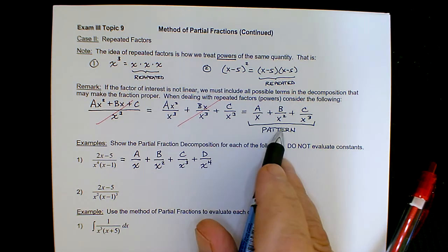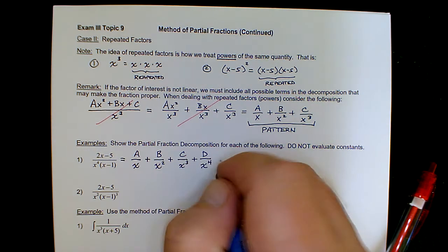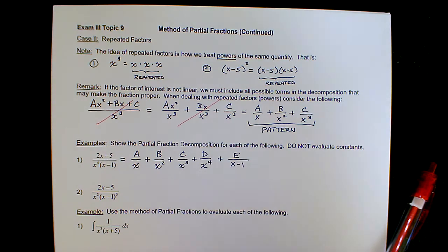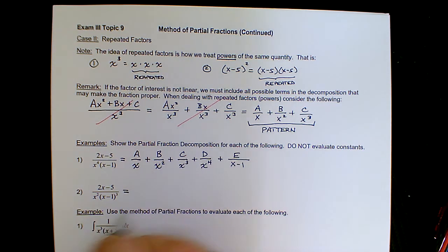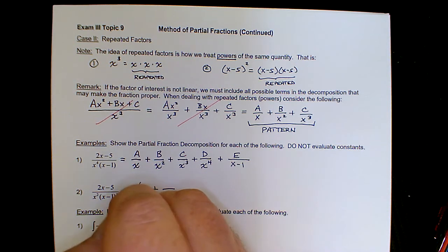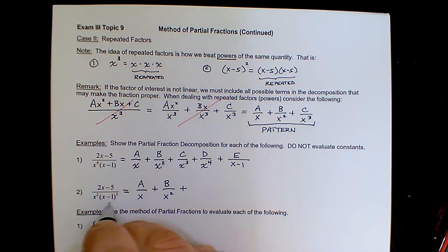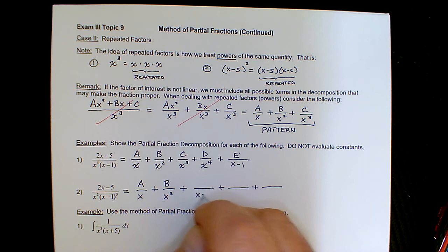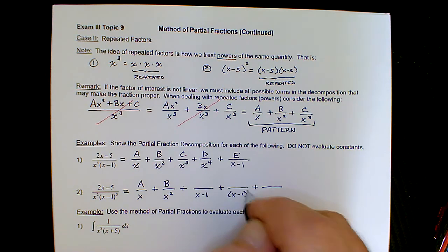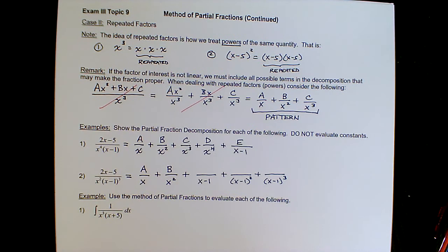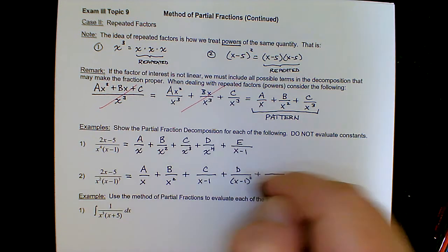Here's another example reinforcing the concept. For x squared: two terms — one with x, one with x squared — both linear, so constants a and b above each. For x minus one cubed: three terms — one with x minus one, one with x minus one squared, one with x minus one cubed — and since x minus one is linear, constants c, d, and e above each.